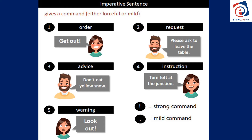Number one, we have an order. For example: 'Get out,' 'Stop doing that,' 'Don't go that way,' 'Do your homework.' So that is an order — we're commanding someone to do something. That is an imperative sentence.